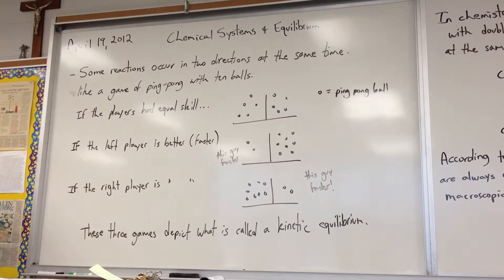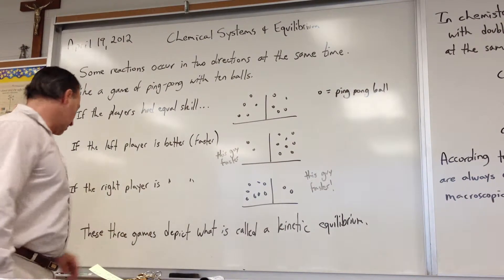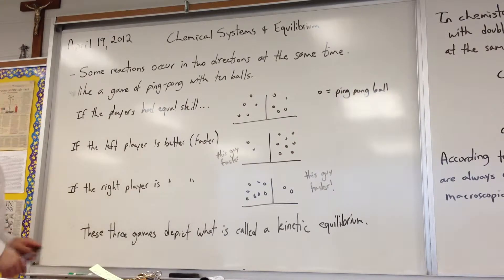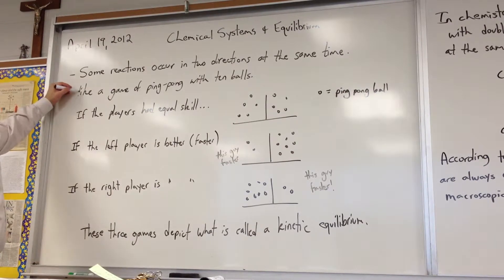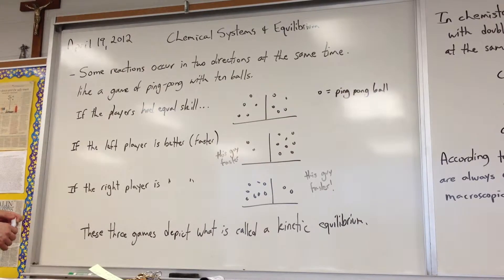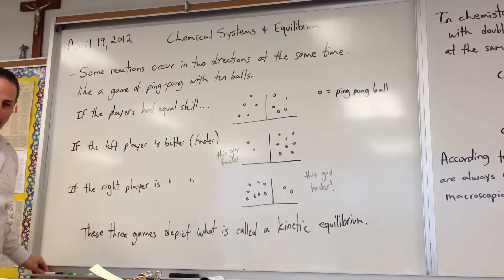We're starting a new chapter today on chemical systems and equilibrium. The first thing we're going to look at is the idea of kinetic equilibrium, which is that reactions can occur in two directions at the same time.